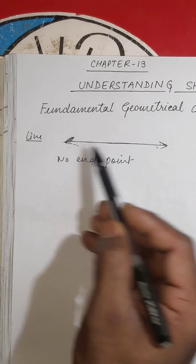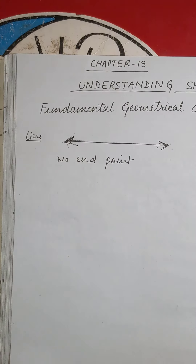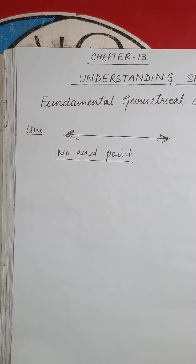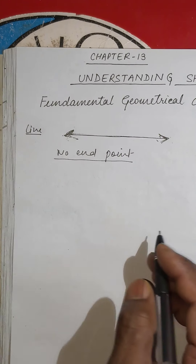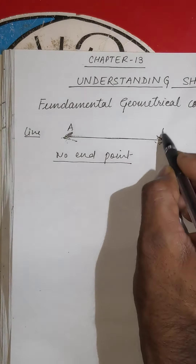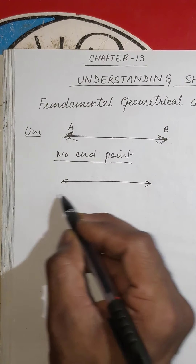That is why I have put two arrows here — these two arrows indicate that the line extends in both directions, therefore having no end points. A line should be denoted as AB or as line L.